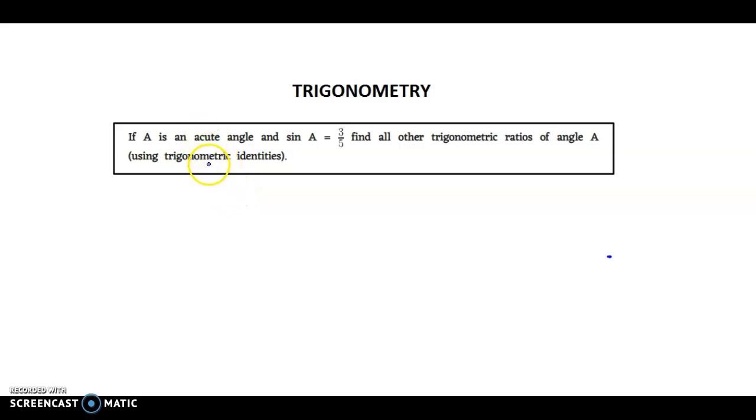In this video, we are going to take an example from trigonometry. If A is an acute angle and sin A is 3 by 5, find all the other trigonometric ratios of angle A using trigonometric identities.